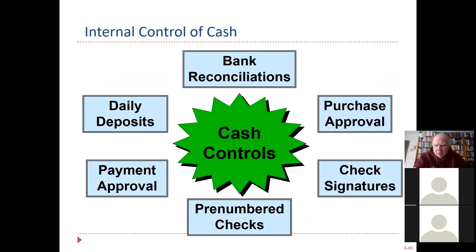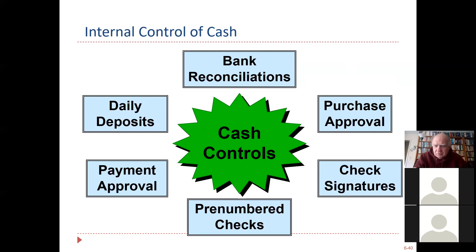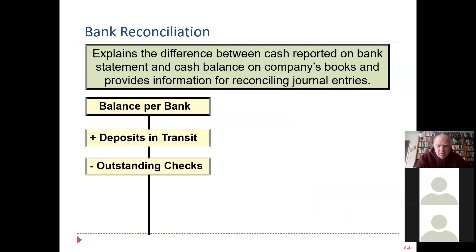Now we're coming to one of the most important controls of cash: the bank reconciliation. You just have to practice this — do them a few times and get the flow of what we're trying to do. Other controls include daily deposits — don't let cash build up over a week. No checks go out without approval, nothing can be bought without approval, and maybe two people sign the checks.